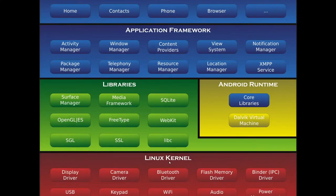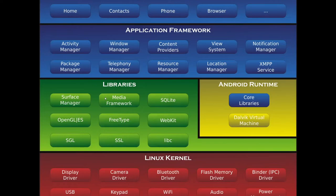On top of the Linux kernel we have the libraries, which are mainly used to handle different types of data. For the display part, three major libraries — Surface Manager, OpenGL ES, and SGL — are used to render 2D and 3D graphics and display them on the mobile screen, and also to collect input from the touchscreen.